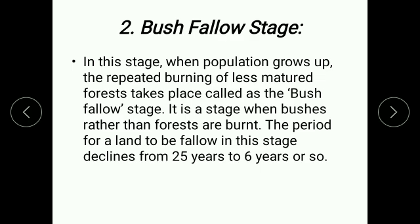In the second stage — the bush fallow stage — when population grows, the repetitive burning of less matured forest takes place. There is a need for additional food production, so the period is reduced from 25 years to about six years. This stage is called bush fallow because it is a stage when bushes rather than forests are burned, and there is no time for bushes to grow into trees. The fallow period in this stage declines from 25 years to six years or so.